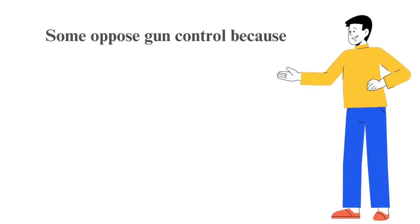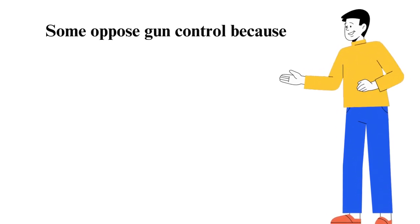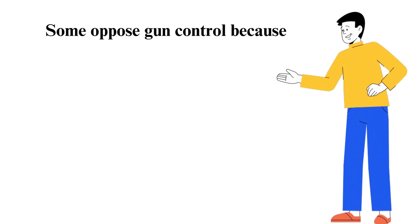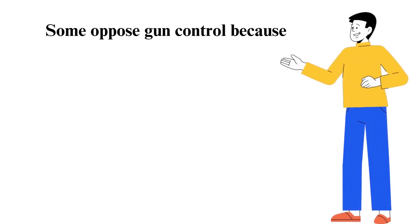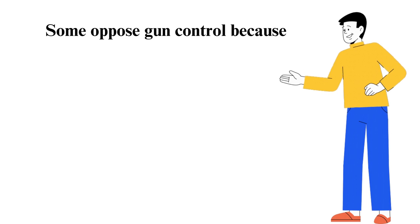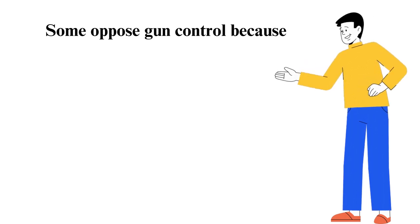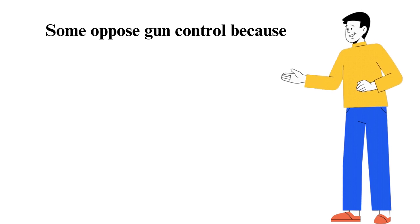On the other hand, some oppose gun control because the Constitution supports this right under the Second Amendment. Law-abiding gun owners can help deter crime when they see it happen. Many will feel unsafe and at risk. Hunting is a right that also benefits the environment by maintaining some populations. Gun control will lead to tyranny since civilians will be at their mercy.